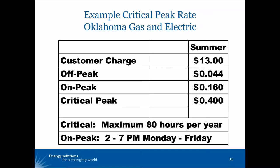During critical peak events, the customer's energy charges go up a lot. This could be just like a three-part rate, except that in the earlier example, the super peak was the same hours of the day during weekdays and that rate always applied. With a critical peak rate, the utility has to declare that there will be a critical peak event, and only during those declared events does the price rise to that higher rate.